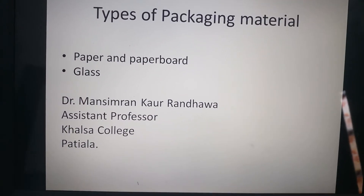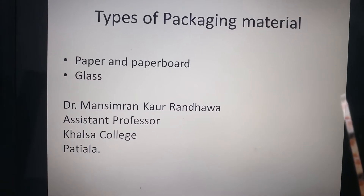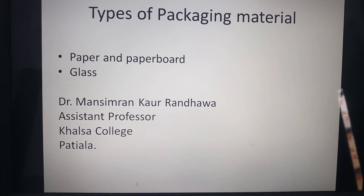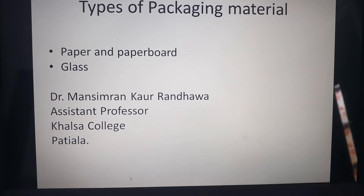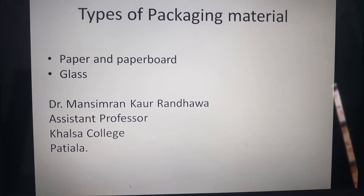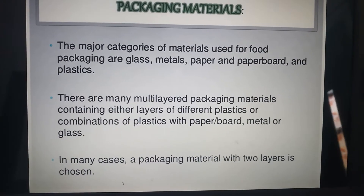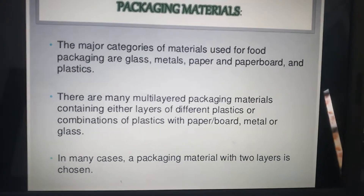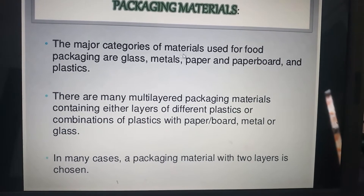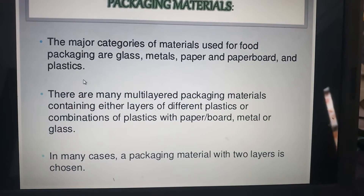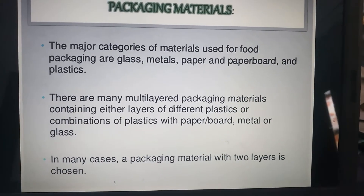Today we are going to discuss the types of packaging material, which will include paper and paperboard, and the second one is glass. Packaging material is categorized into different types. Different packaging materials are used such as glass, metals, paper, paperboards, and plastics. There are many multi-layered packaging materials which contain either layers of different plastics or a combination of plastics with paperboard, metal, or glass.